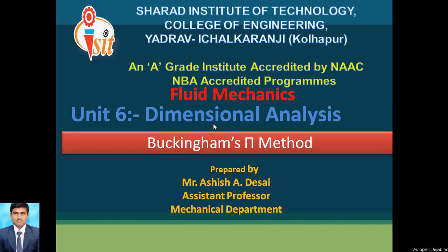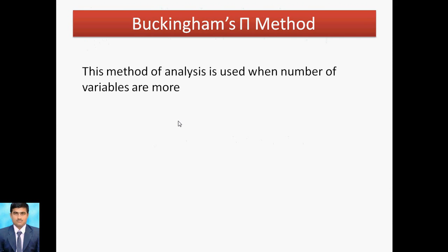Hello everyone, myself Ashid Desai, Assistant Professor, Mechanical Department. Today we are going to discuss Unit Number Six: Dimensional Analysis. In that content, we are going to discuss the Buckingham Pi method. In the last lecture we discussed the Rayleigh's method, so now we are discussing the Buckingham's method. This method is used when the number of variables is more — if three or four variables are there we can go for Rayleigh's method, but when there are more, it becomes tedious, so we go for Buckingham's method.